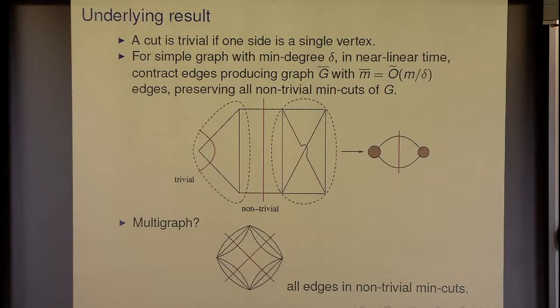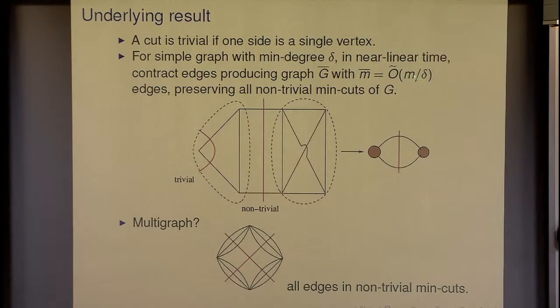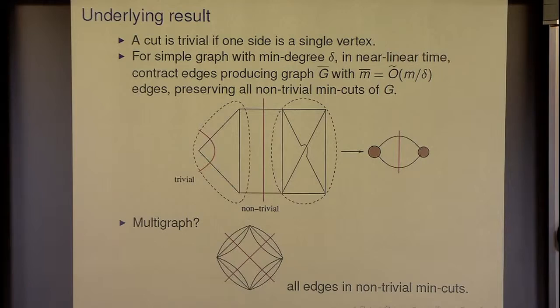Why is this not for multigraphs? It clearly can't be — just take a cycle with parallel edges, and any of these cuts (of which there are a quadratic number) will be a non-trivial min-cut. The result only matters when the degree gets large. If the degree is small, lambda is small, and we can just run Garbo's algorithm. So I can assume degrees are large.